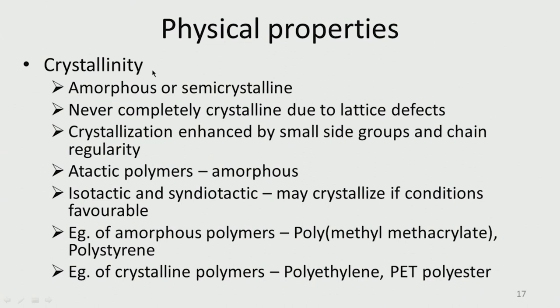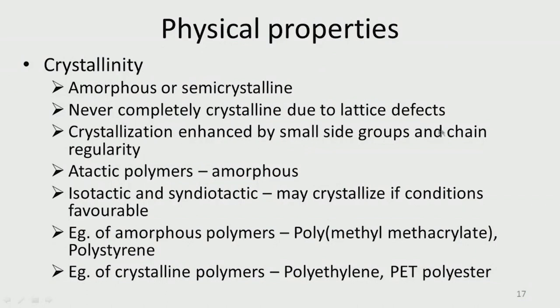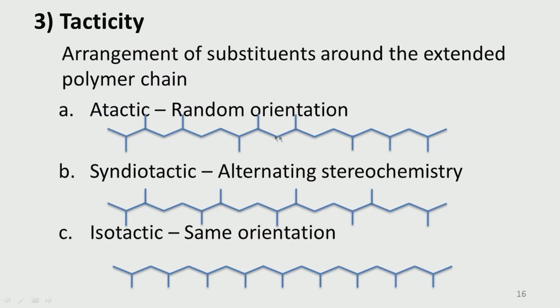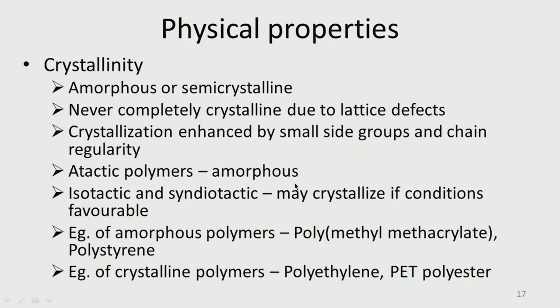Polymers can also have some crystallinity — they can be amorphous or semi-crystalline, but never completely crystalline unlike metals. There could be amorphous and crystalline regions; degradation tends to start in the amorphous regions. Crystallization is enhanced by small side groups. Atactic polymers are always amorphous as they cannot pack well; isotactic polymers may crystallize under favorable conditions. PMMA and polystyrene are amorphous; polyethylene and polyethylene terephthalate can have crystalline properties.